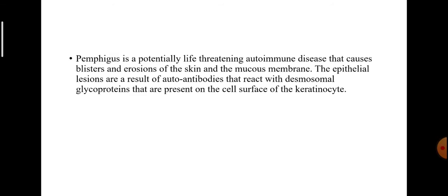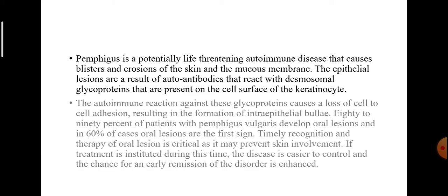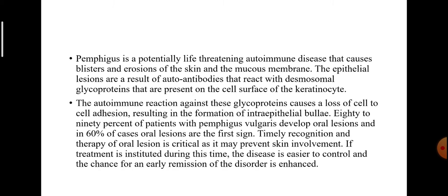Oral Pemphigus vulgaris. Pemphigus is a potentially life-threatening autoimmune disease that causes blisters and erosions of the skin and the mucous membrane. The epithelial lesions are a result of autoantibodies that react with desmosomal glycoproteins present on the cell surface of the keratinocyte. The autoimmune reaction against these glycoproteins causes a loss of cell-to-cell adhesion, resulting in the formation of intraepithelial bullae.